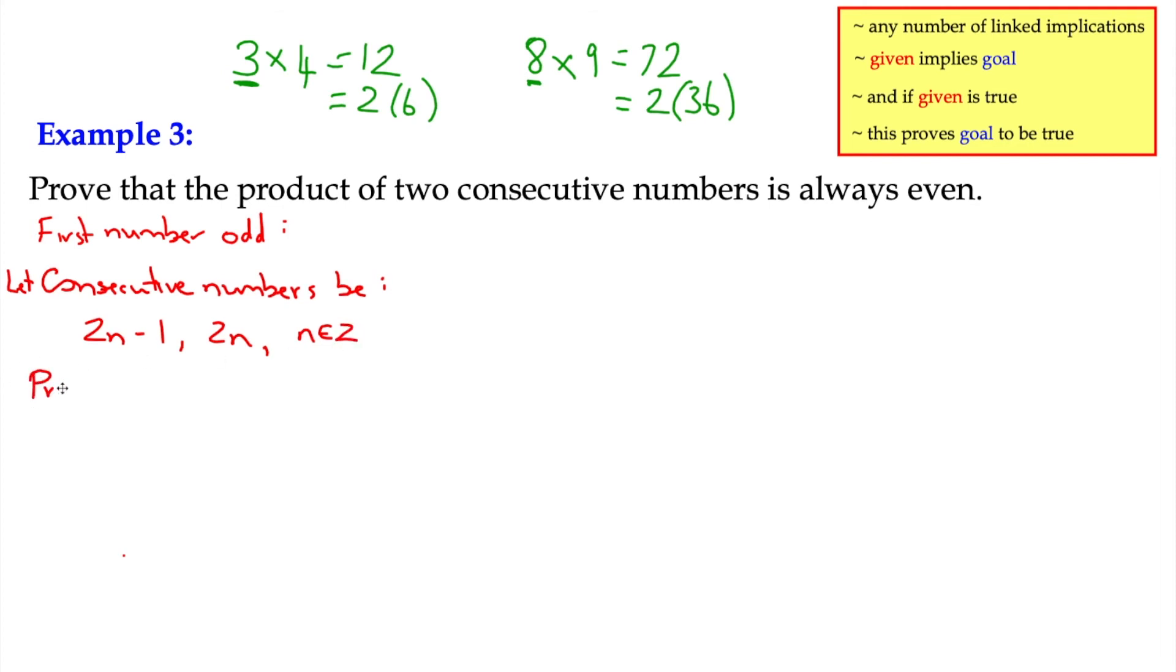So the product, this is effectively our given, the product of that would be 2n minus 1 times 2n. The given, the goal is to show that it's an even number, and in other words, we want to try and make a common factor of 2. So if we multiply out, we can write an equivalent line. That gives us 4n squared, we're multiplying out 2n by 2n, and then negative 1 times 2n is negative 2n.